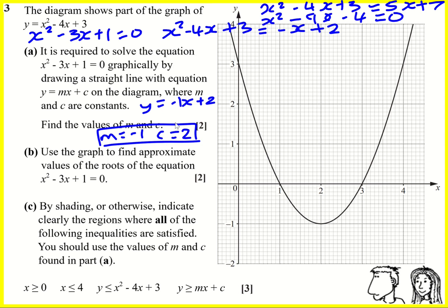Next up we're basically asked to draw this so that we can find the roots of this equation. It's going to have a y-intercept of 2 and a gradient of minus 1. We can also use the x-intercept — if you set y equal to 0 and solve it's going to give x equals 2. With these two points you can just draw a straight line straight away.